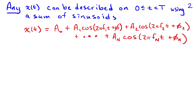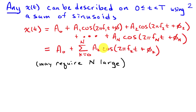Any signal x(t) can be described on a limited interval from 0 to capital T using a sum of sinusoids. So I can write x(t) as a₀ plus a₁·cos(2πf₁t + φ₁) plus a₂·cos(2πf₂t + φ₂), and so on up to aₙ·cos(2πfₙt + φₙ). Using sum notation, this is a₀ plus the sum from k=1 to N of aₖ·cos(2πfₖt + φₖ). To represent an arbitrary signal, N may need to be somewhat large, but it's possible to almost exactly describe any signal in this form.